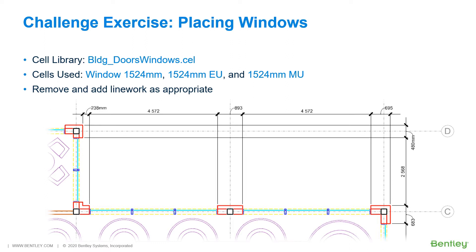Shown here is the northeast corner of the building, where you will be placing windows along the north face. For this, you will be using the cell library: building, doors, windows. The cells that you will be using for this are listed. Remove any line work as appropriate. You may pause and rewind the video as needed to get the necessary information to complete this challenge exercise.